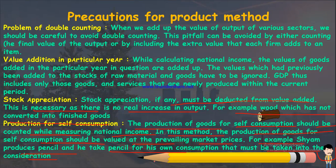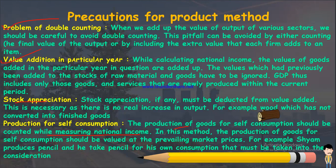For example, if Mr. Shyam is a pencil manufacturer and one day he withdraws some pencils for his own consumption, that production for self-consumption must be included in the product method calculation and should not be ignored. In summary, the four precautions for the product method are: avoid double counting, use only current year value additions, deduct stock appreciation, and include production for self-consumption.